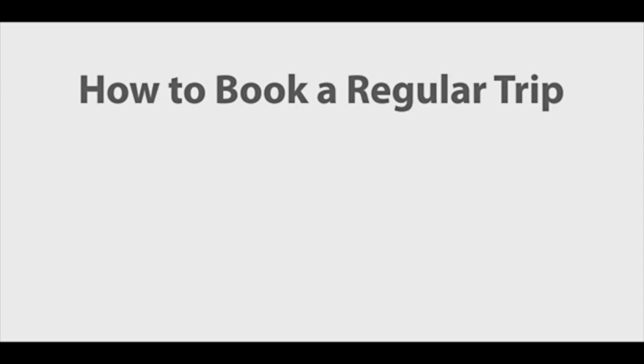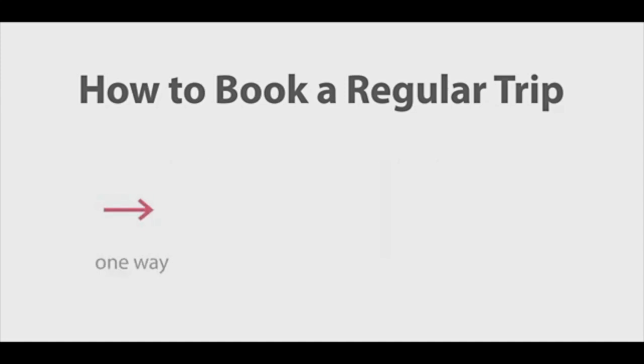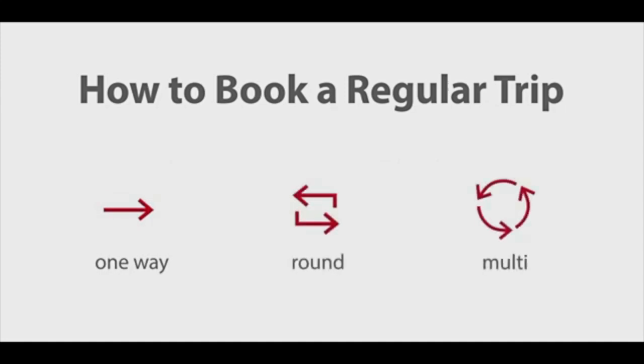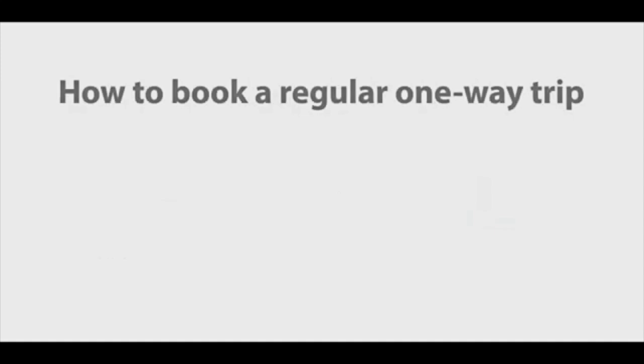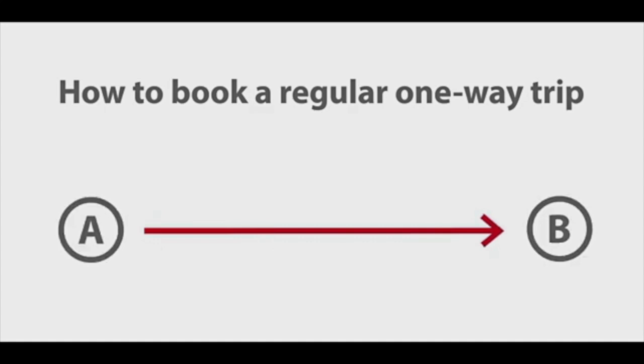How to Book a Regular Trip. A regular trip, also called a subscription or recurring trip, can be scheduled to repeat weekly or monthly. Regular trips can be one-way, round, or multi-trips. How to Book a Regular One-Way Trip. A one-way trip is one trip from an origin to a destination and does not include a return trip.